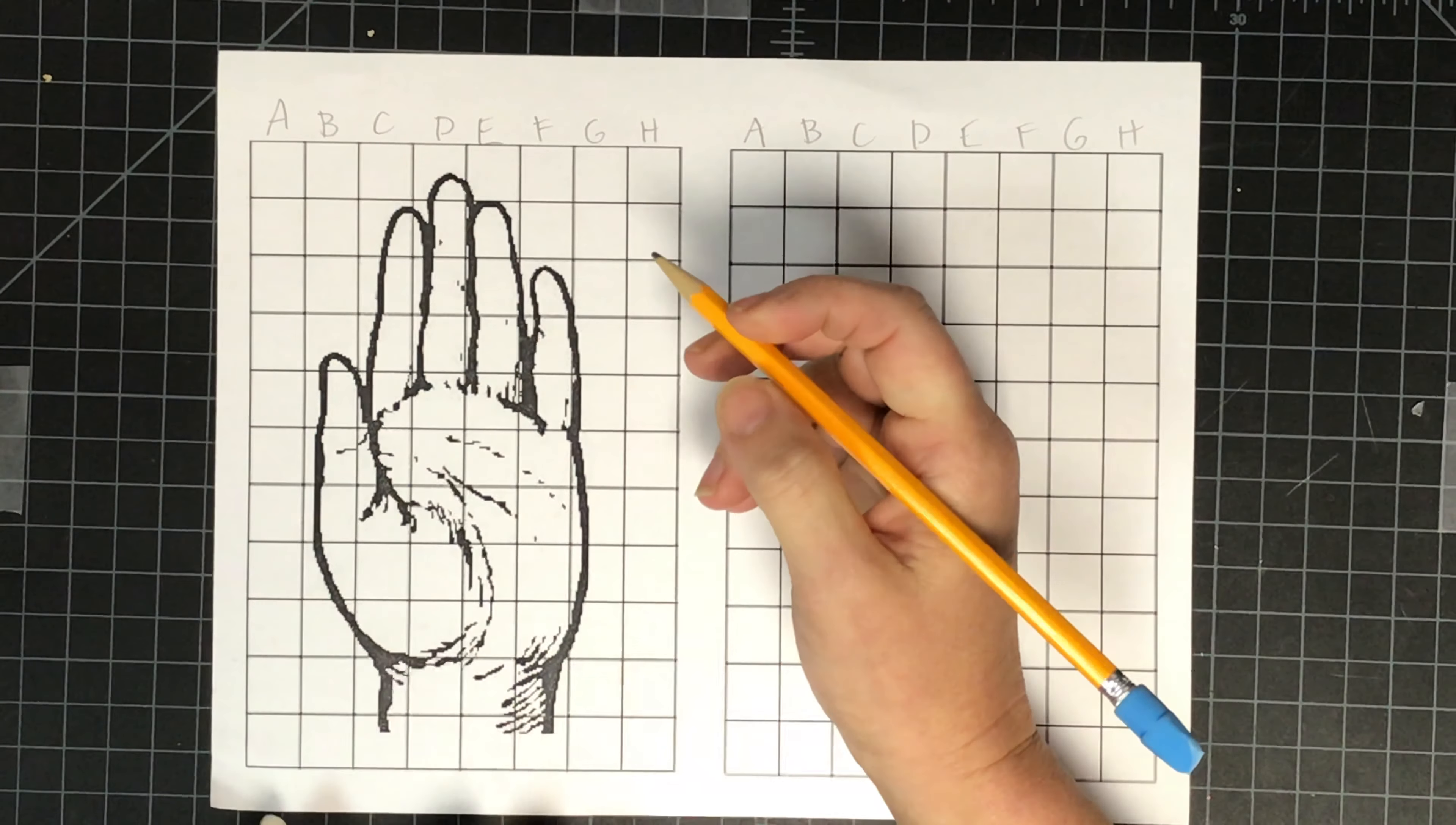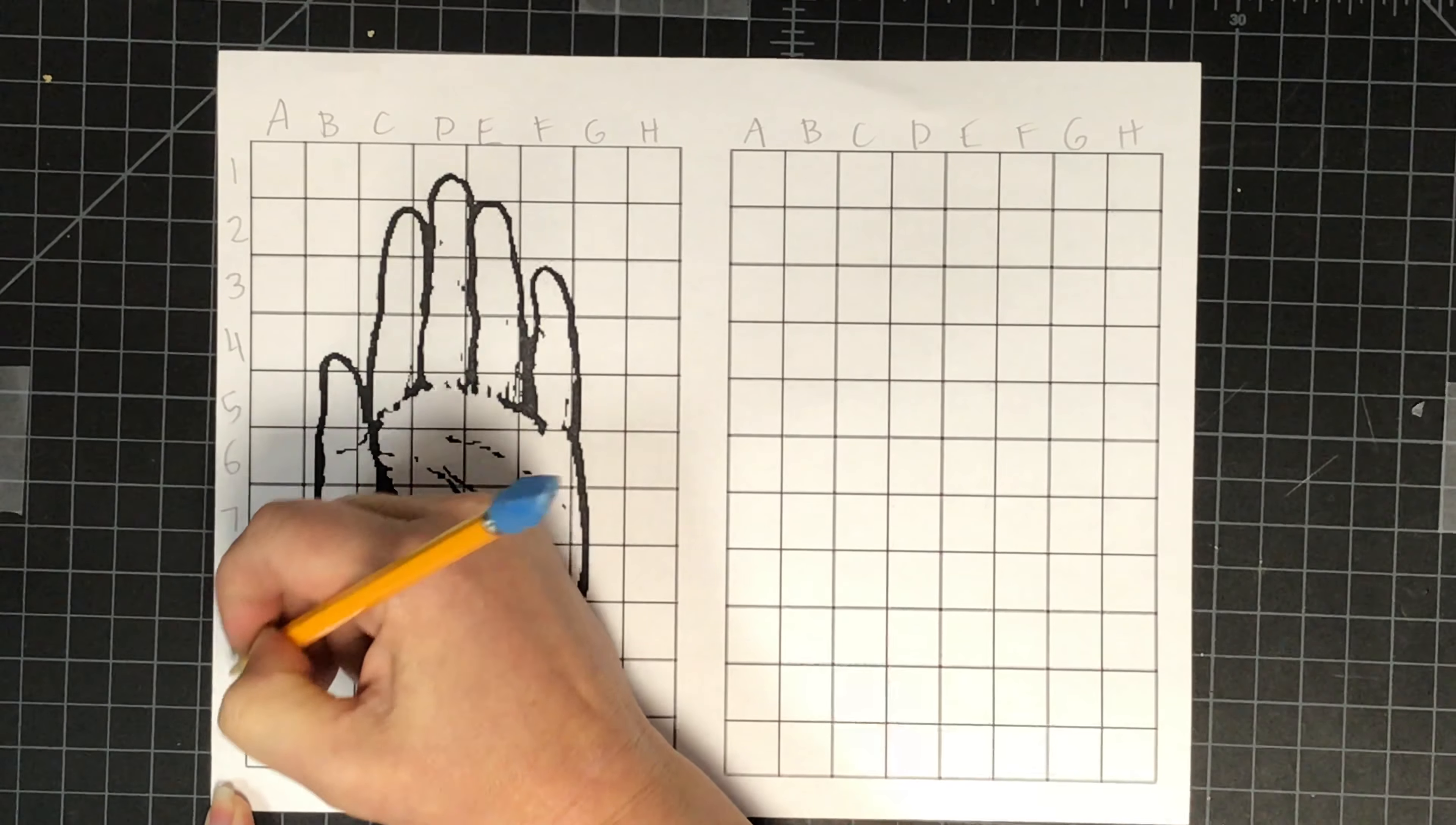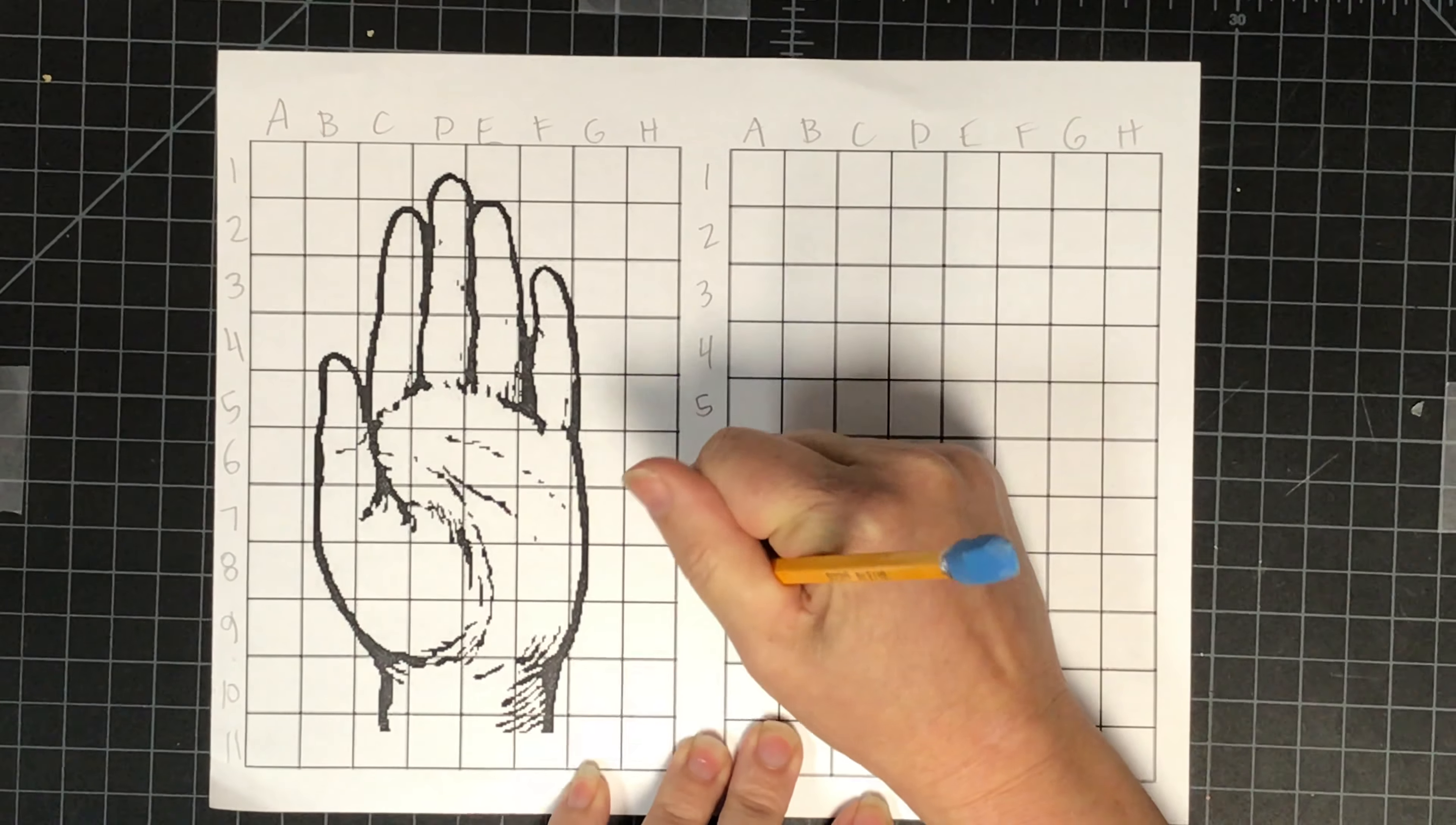Down the side I'm going to use numbers, so here we go: one, two, three, four, five, six, seven, eight, nine, ten, eleven. Same thing over here because we want them to be the same: one through eleven.